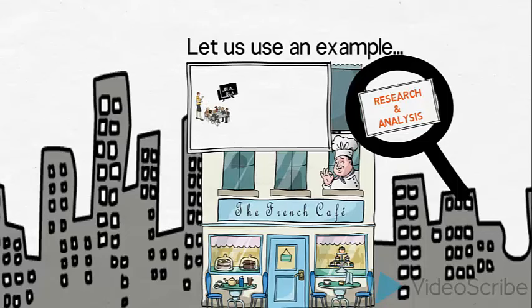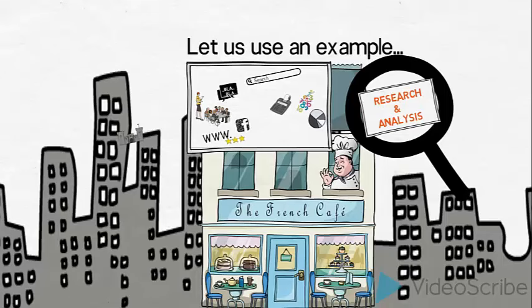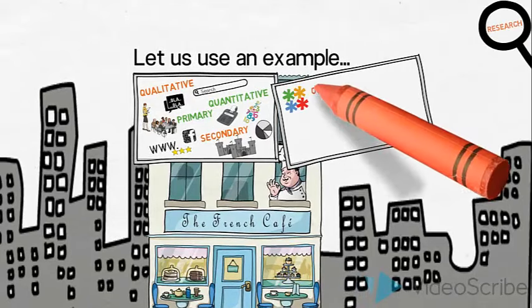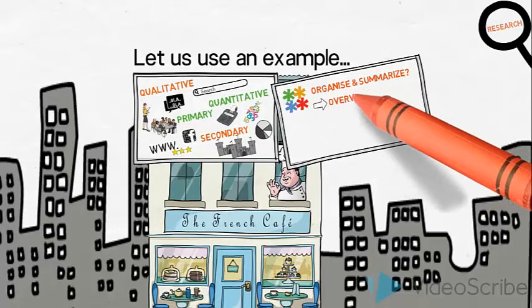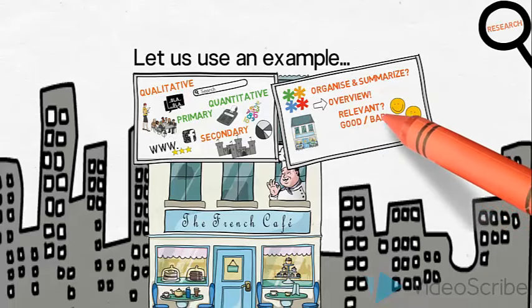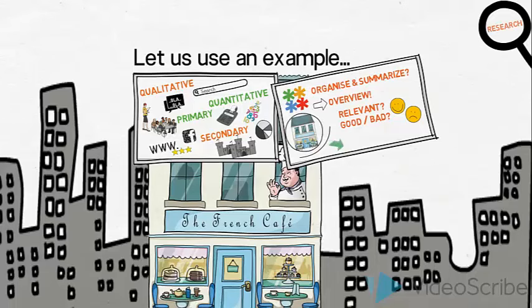They have spoken to customers and suppliers. They have analyzed their financial accounts and their online presence and interactions in detail. And they have also investigated their competitors. During the process they have collected vast amounts of data — both qualitative, quantitative, primary and secondary. But how do they organize and summarize all this information? They need an overview that clearly shows what information is relevant, what is good and what is bad, and they need to distinguish between information that describes their own internal situation and that which describes the external environment, the world around them.